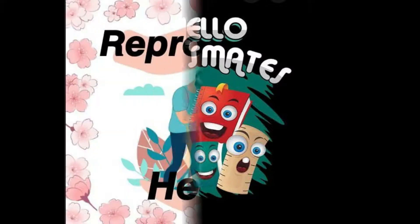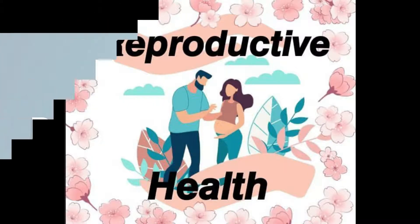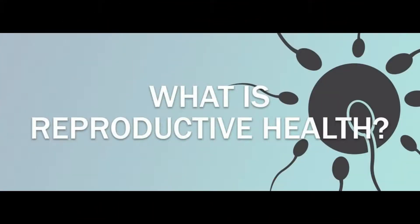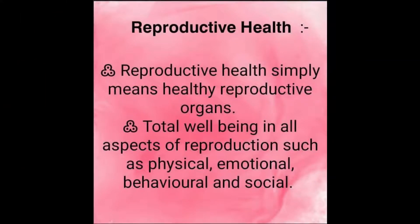Hello classmates, today we are going to complete the whole chapter of Reproductive Health in just one video. Reproductive health simply means healthy reproductive organs and total well-being in all aspects of reproduction, such as physical, emotional, behavioral, and social.